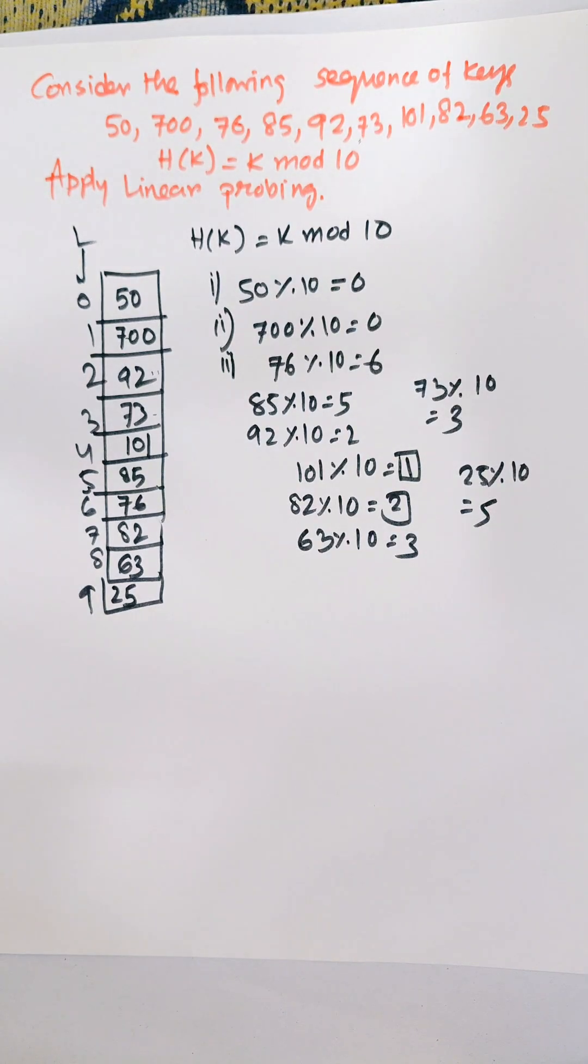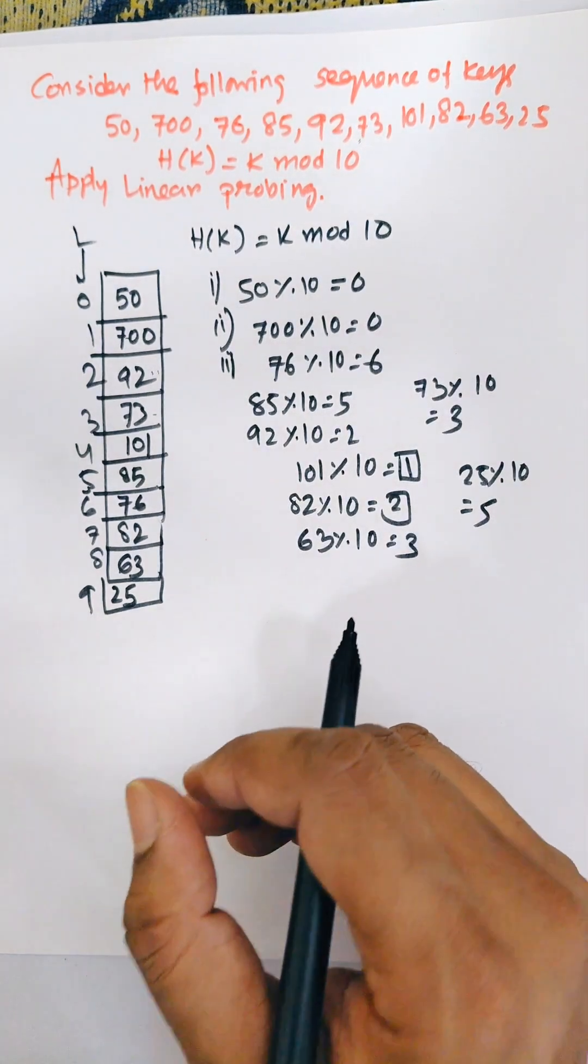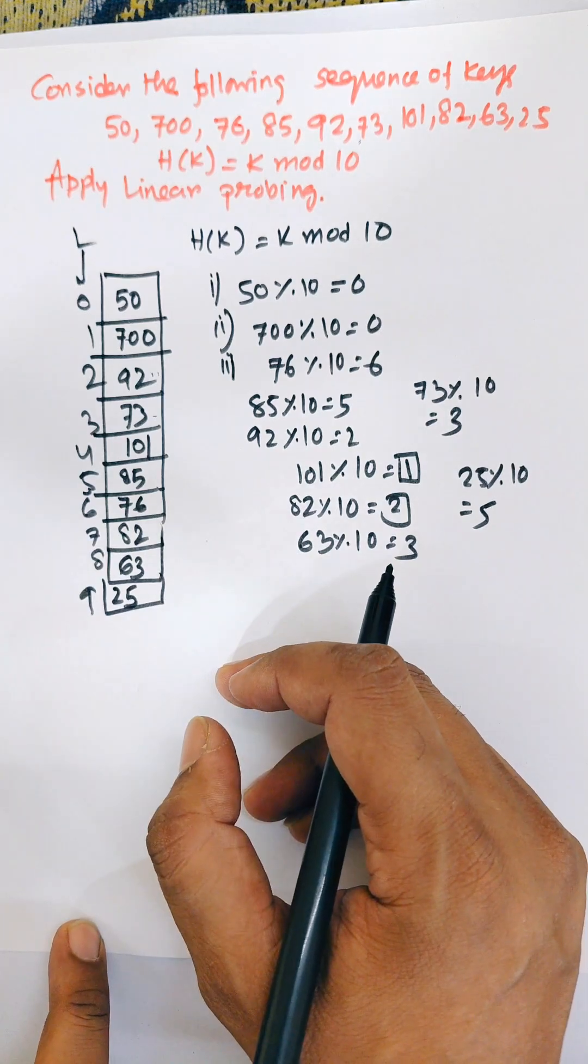Actually, in linear probing, the hash table is searched sequentially starting from the original location of the hash.